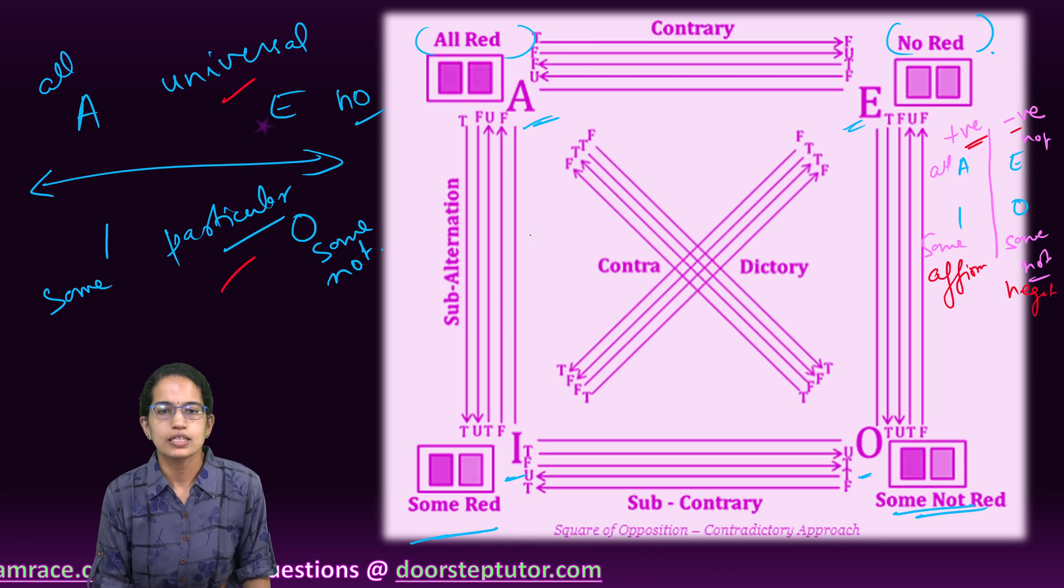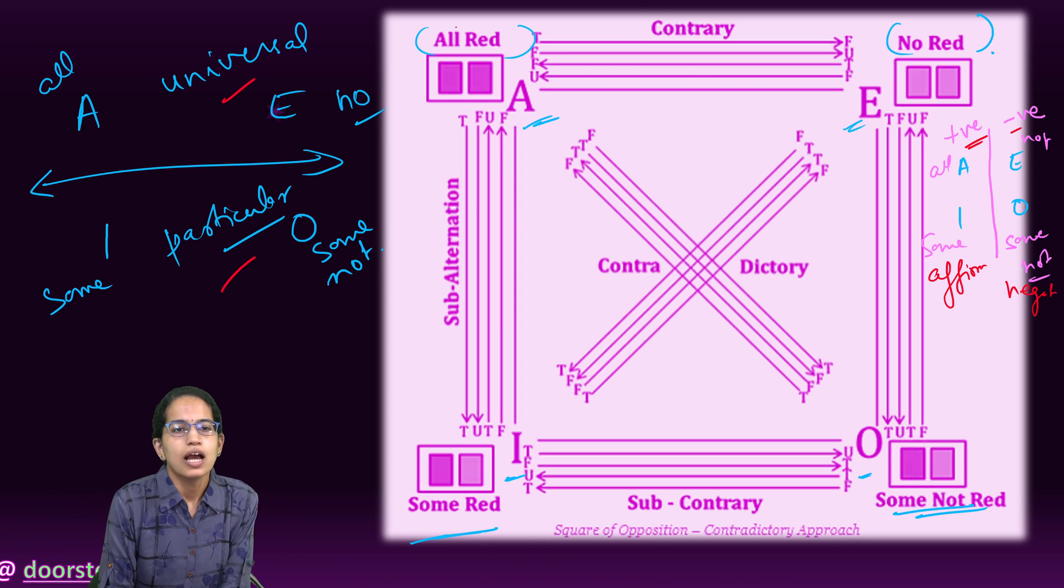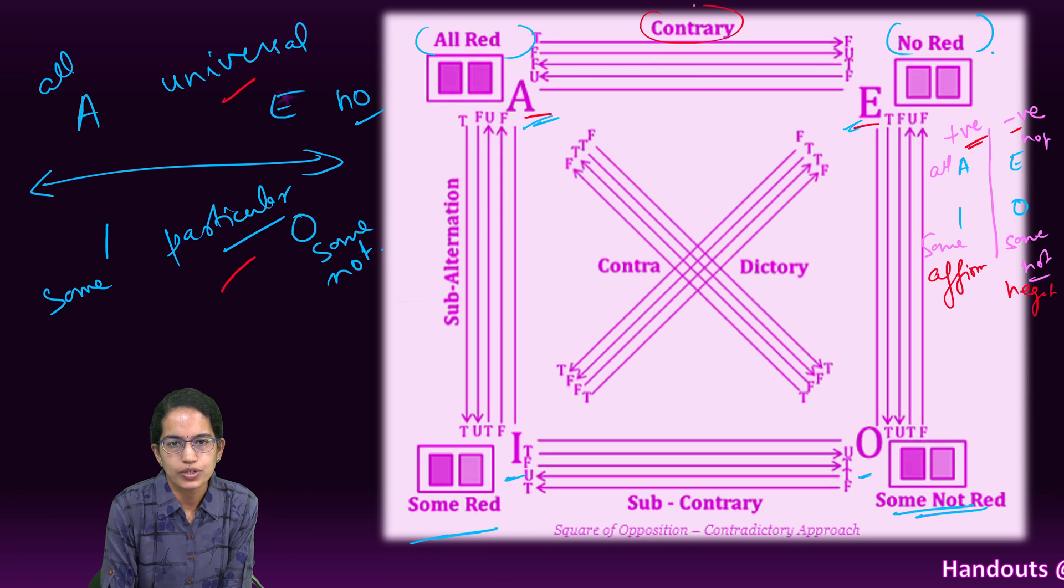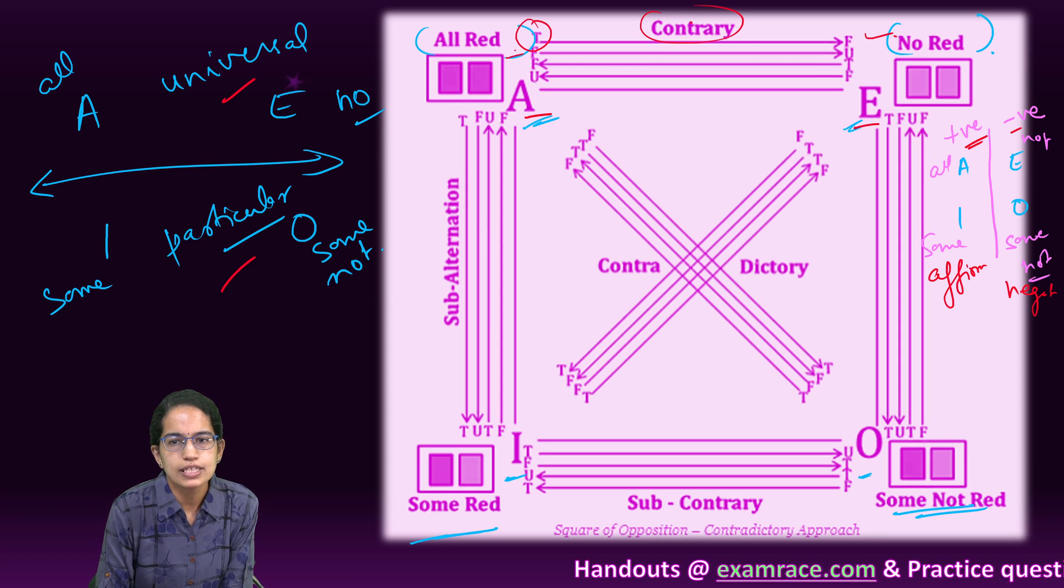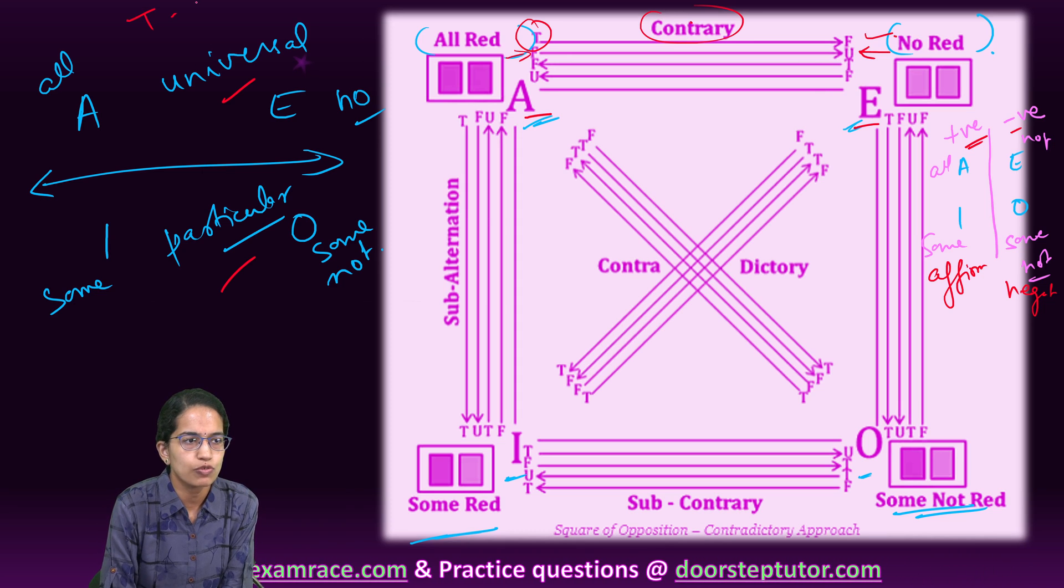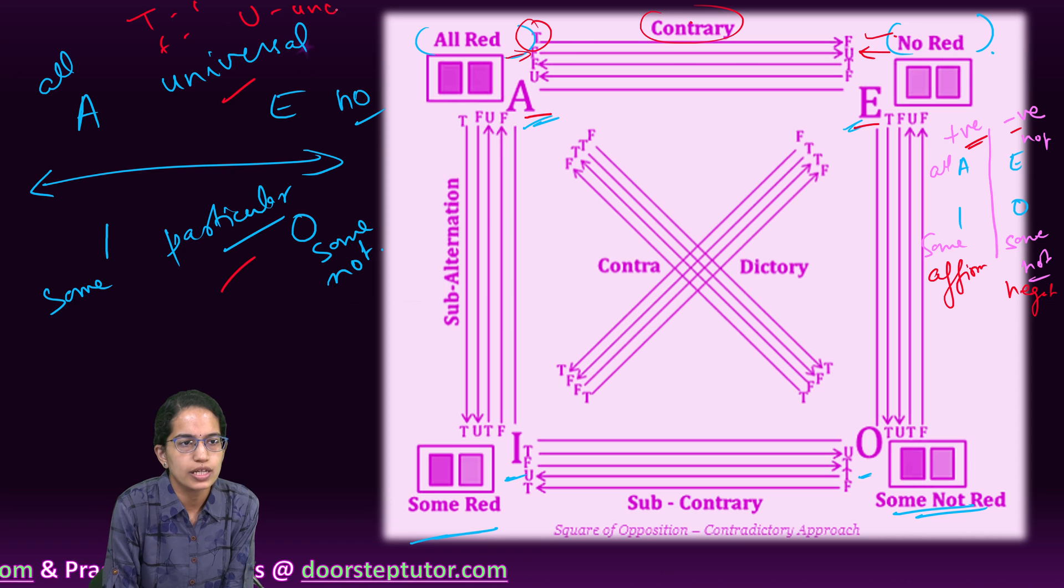Now this is one of the important square of opposition concepts. Here, between all and none, the relation is contrary. Because if this is true, this has to be false. But if this is false, this can be uncertain. It can be true or it can be false. So T stands for true, F stands for false, and U stands for uncertain.